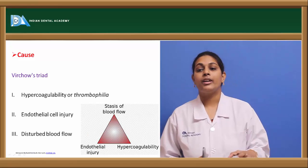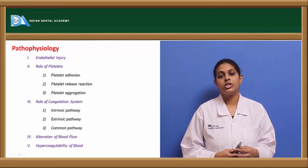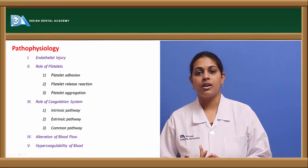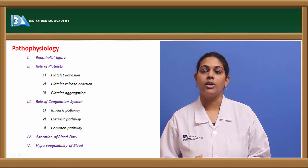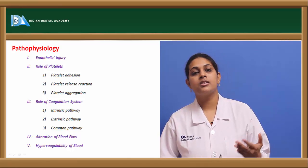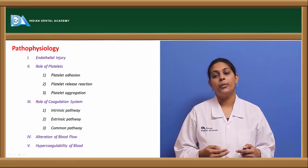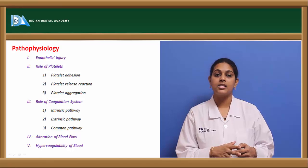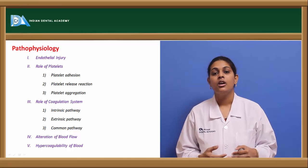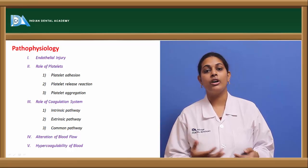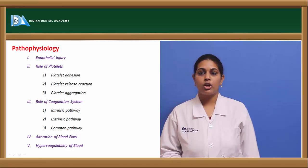All three factors — hypercoagulability, endothelial cell injury, and disturbed blood flow — contribute to the formation of thrombosis. In the pathophysiology, endothelial cell injury leads to formation of a platelet plug to maintain normal homeostasis. After exposure of the underlying connective tissue, platelets aggregate at the site of injury, become activated, and release certain granules, which further cause platelet aggregation. This then results in activation of the coagulation system.